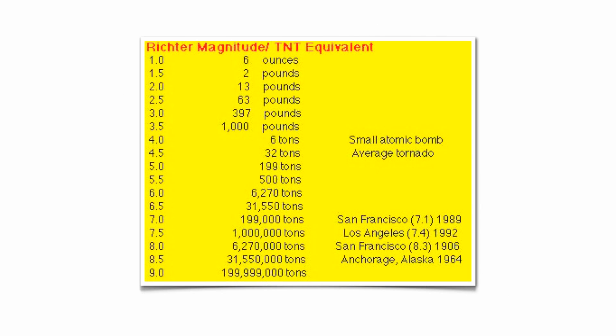The one scale that we're a little bit more familiar with is the Richter scale, and that goes from 1 to 10. They give you the equivalent in dynamite — how much dynamite you need to trigger the amount of energy given off by a specific earthquake. This is the scale we're much more familiar with: the bigger the number on the Richter scale, the stronger the earthquake was.